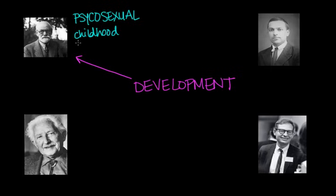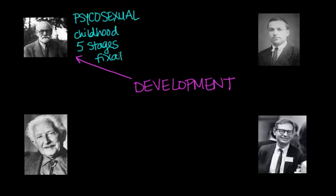His theory was built upon five stages, which we'll get into a little bit later. If these five stages are completed successfully, the result is a healthy personality. Certain issues, if they're not resolved at a certain stage and we move ahead to the next stage, then something called fixation can happen. That's another key term we'll look at later.